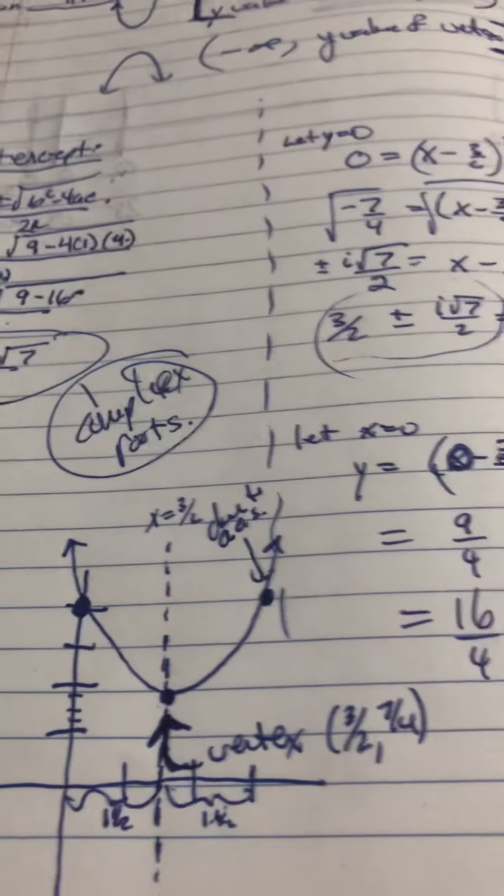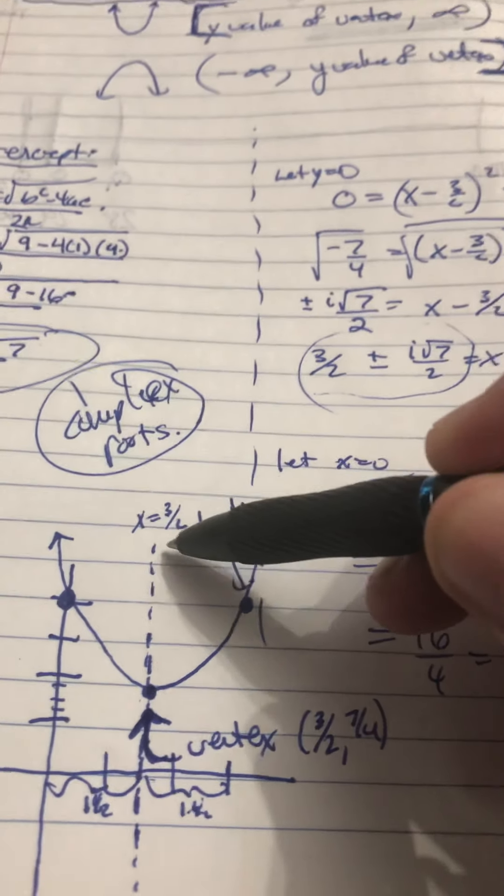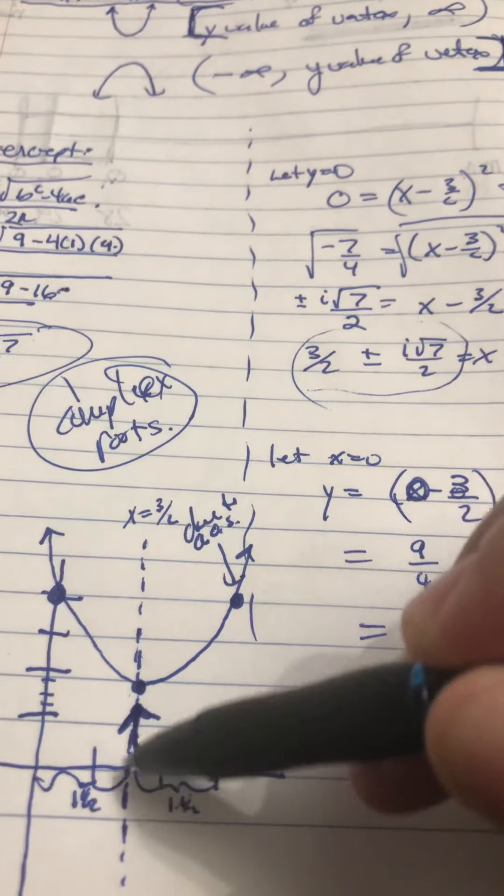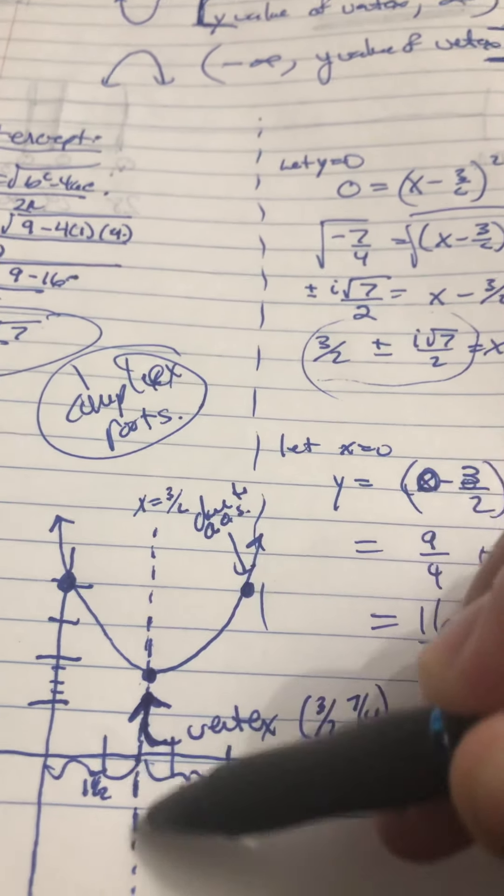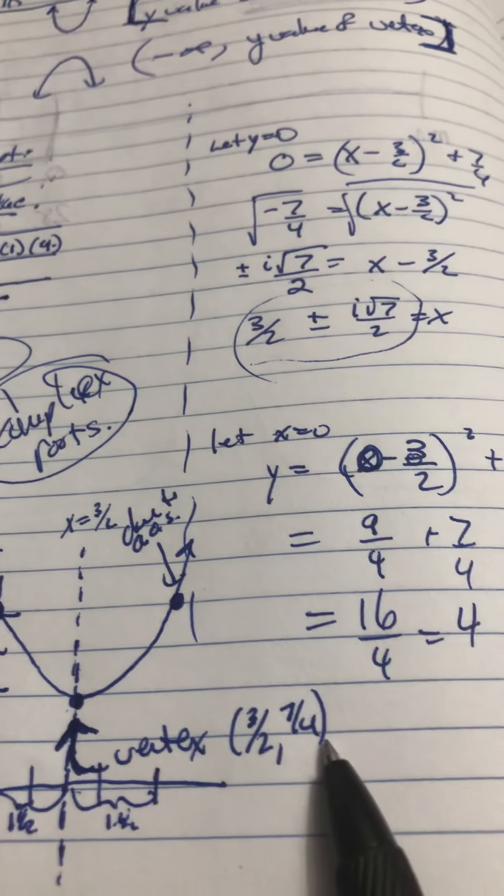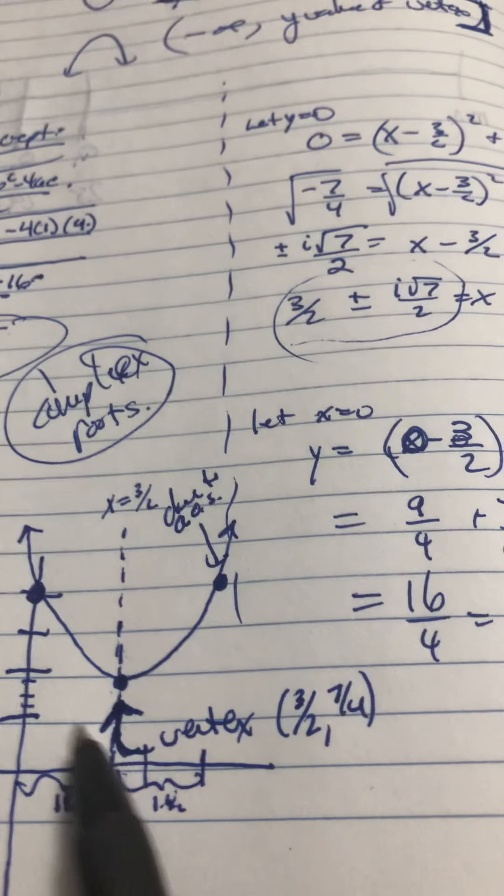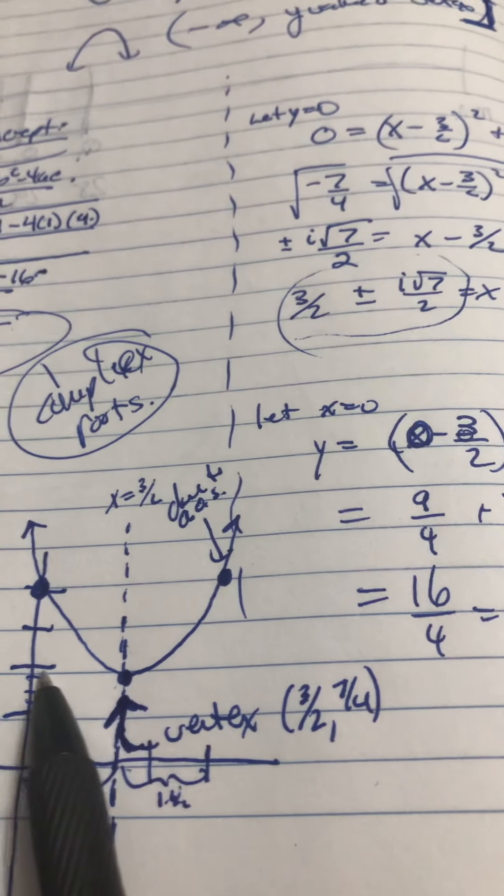So, a couple of things. x is 3 over 2. That's our axis of symmetry. So, I put a dotted line at 3 over 2, which is 1.5. Okay. Our vertex is 3 over 2, 7 over 4. So, that's 1 and a half, and then that's 1 and 3 fourths. So, I did my best to approximate.